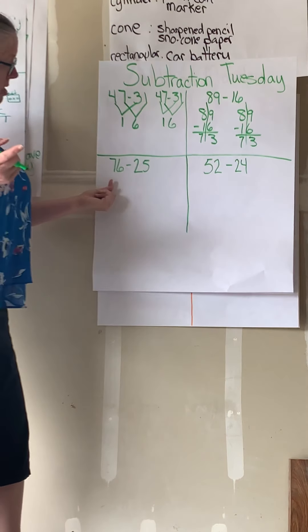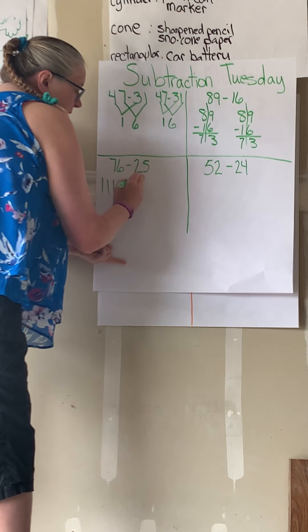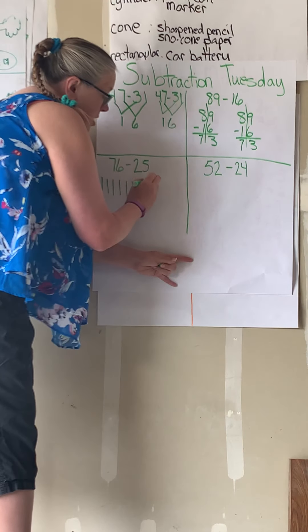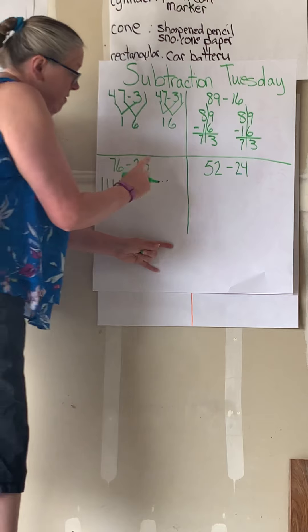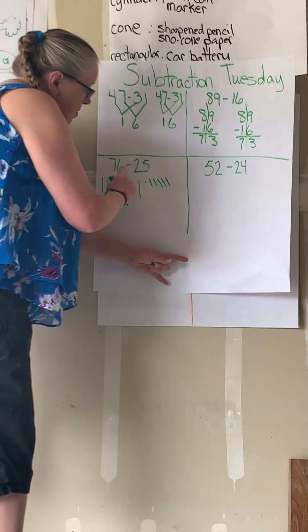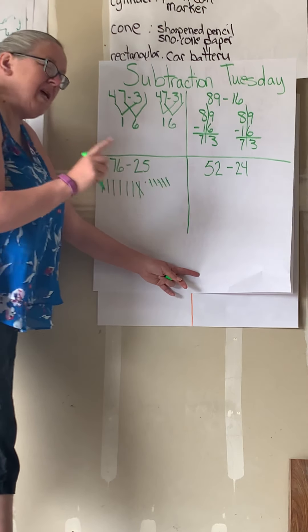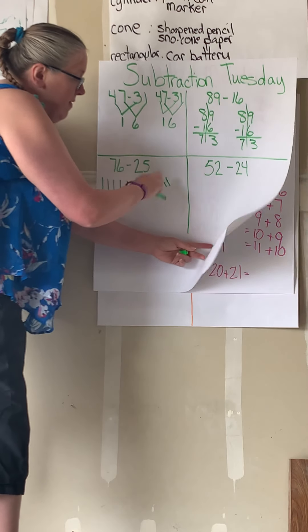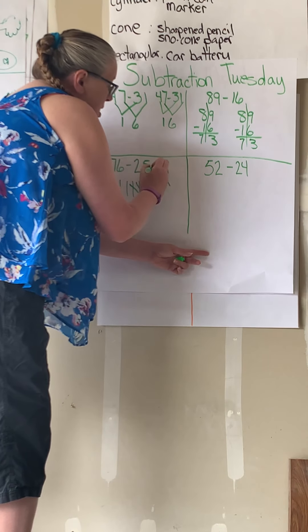Now let's see about this one. We're going to draw a picture. I'm going to take 76. One, two, three, four, five, six, seven — because remember, each one of those is ten: 10, 20, 30, 40, 50, 60, 70. Then six ones: one, two, three, four, five, six. When we're doing subtraction, all we have to do is cross off that many. I'm going to start with my ones and cross off five, then cross off two of the tens — because all these sticks are worth ten each. Now I count: one one is left, and 10, 20, 30, 40, 50. That equals 51.